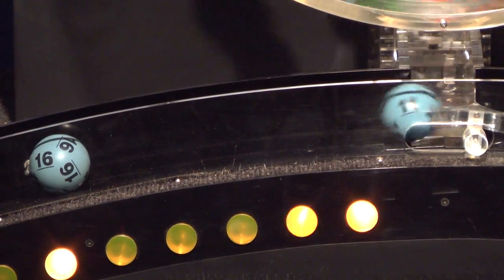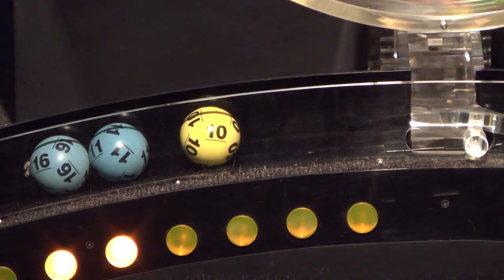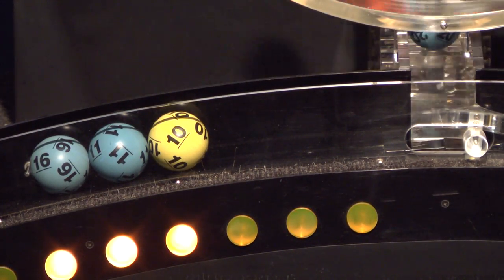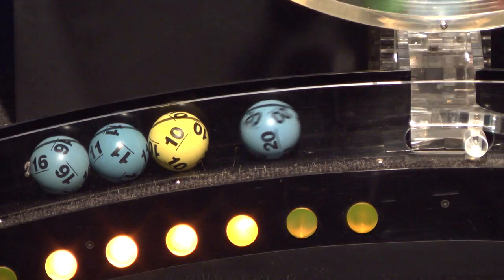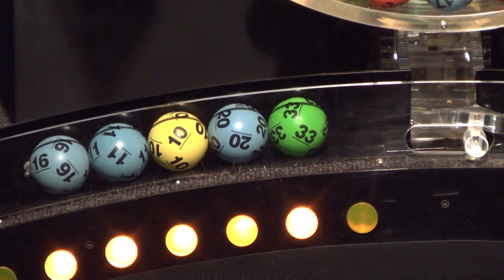First number is 16. Following that is number 11. Then number 10, if you've matched these three numbers you've already won a prize. And there's 20, and finally 33.